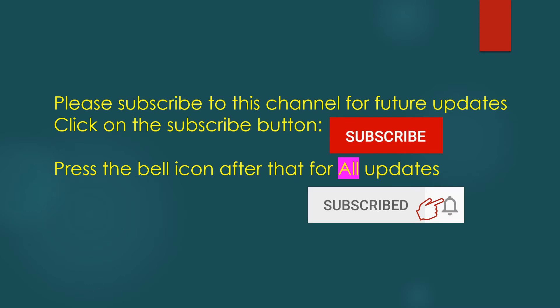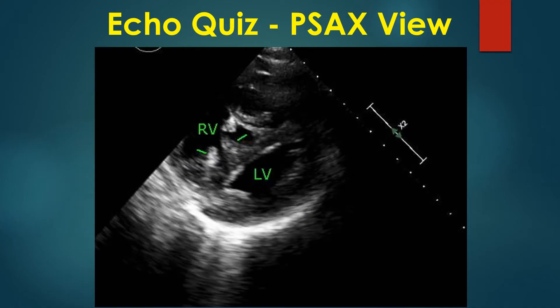ECHO from parasternal short axis view shows a D-shaped left ventricular cavity alongside a grossly hypertrophied right ventricle.